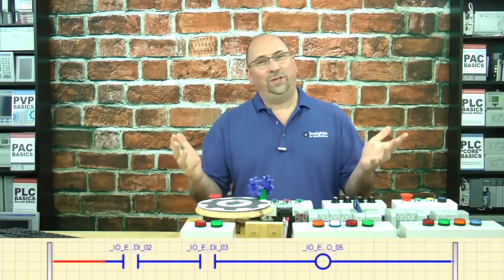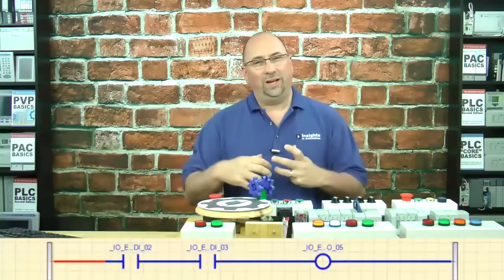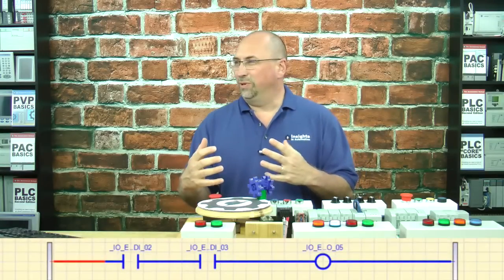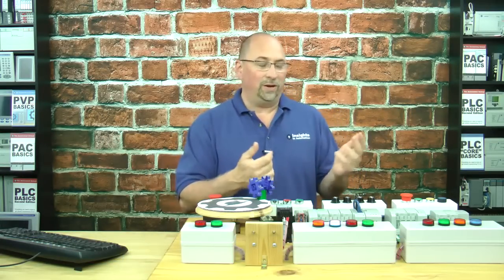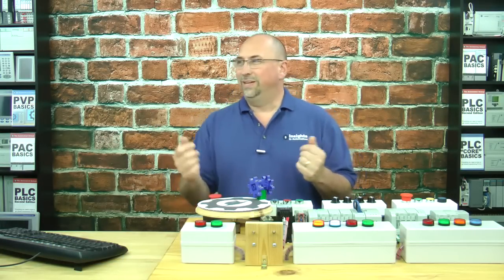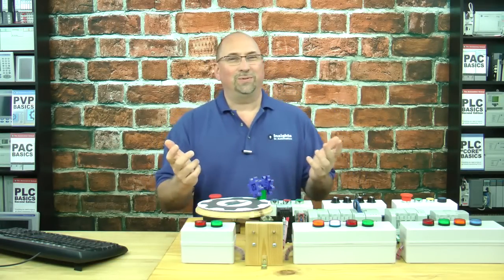And that's it. That's how you can use ladder logic inside of function blocks in CCW in the Micro 800. I just thought that was odd.